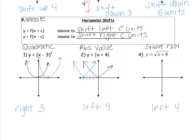Number three was a little trickier because you had to remember what a square root function looks like. That's your basic square root function, and we're moving it to the left four. So your graph vertex should be four units to the left and look like that.